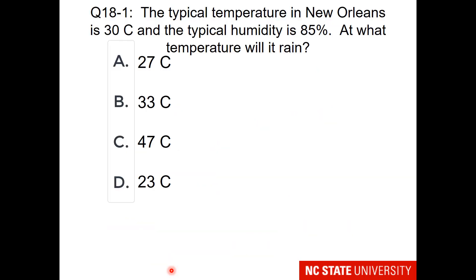So here's a question for you on our planet. The typical temperature in New Orleans, I can say that because my sister lives in Louisiana, is 30 degrees Celsius and the typical humidity is 85%. At what temperature will it rain? This is a two-step problem.